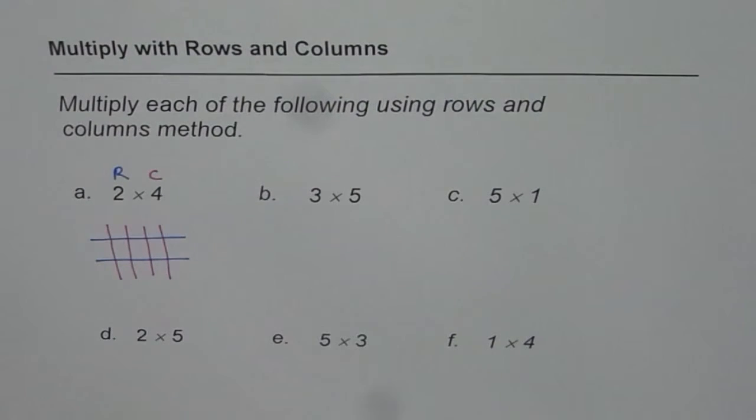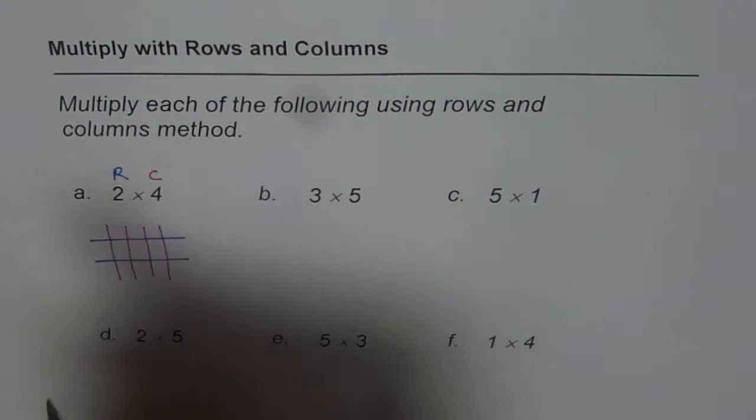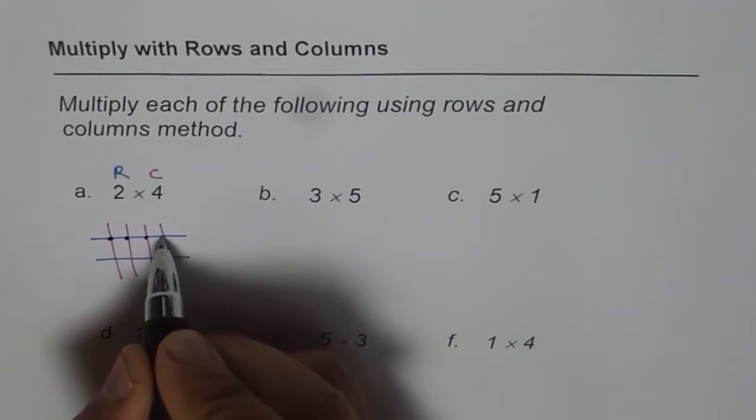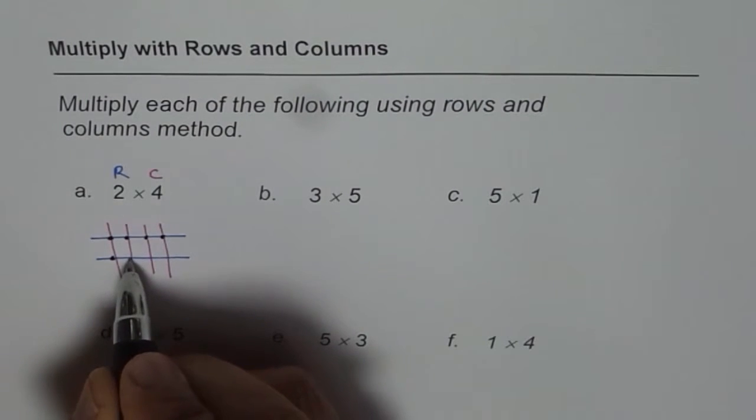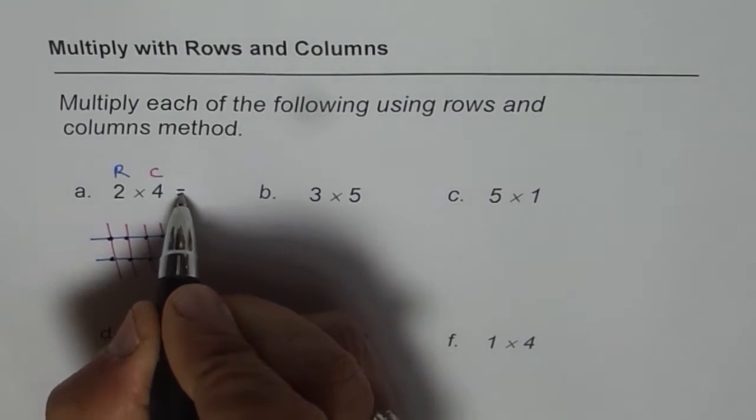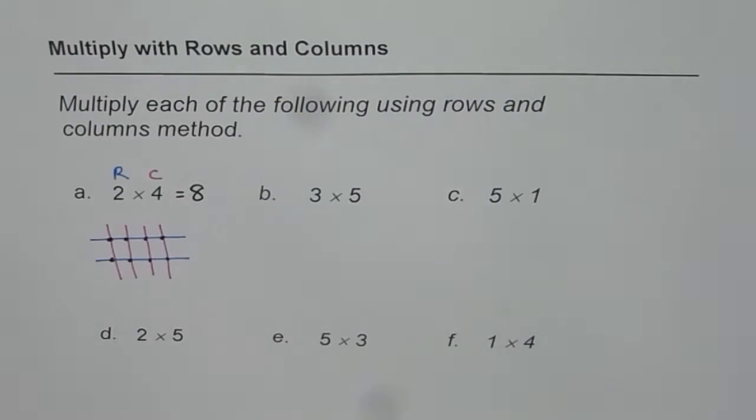And then we need to count at how many points do they cross? 1, 2, 3, 4, 5, 6, 7, 8 and therefore 2 times 4 is equal to number 8, right?